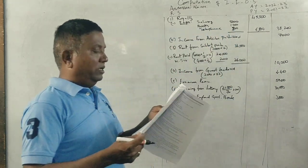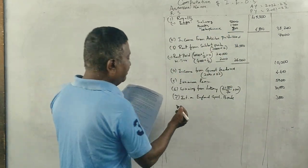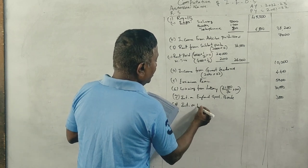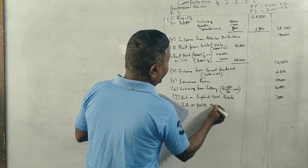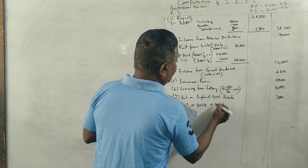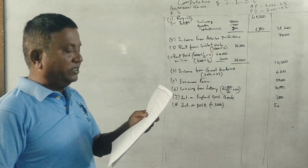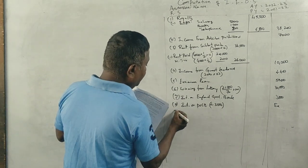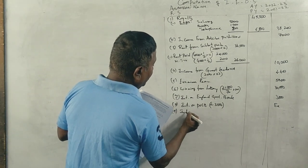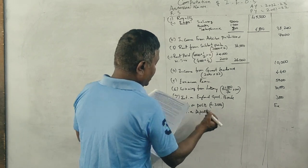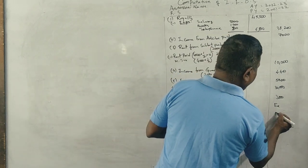Next, interest on post office savings bank account is exempted because less than Rs. 3,500, so therefore it is exempted. Next, interest received from deposit in a firm: interest on deposits is Rs. 5,400. That's all.